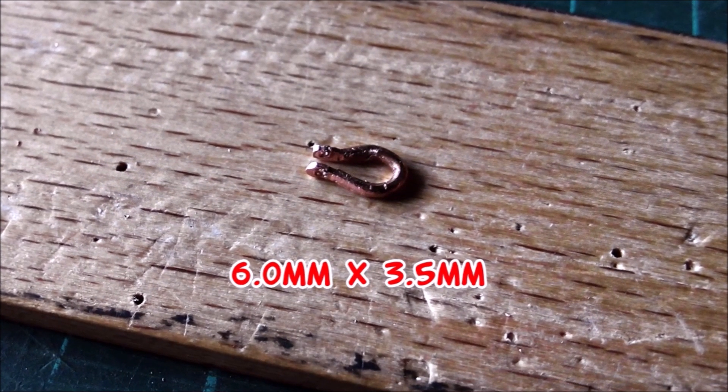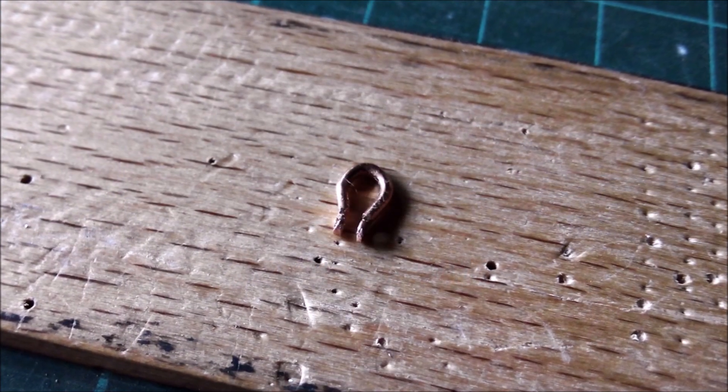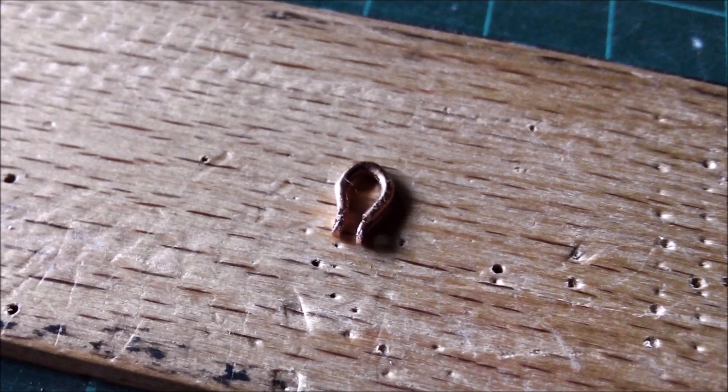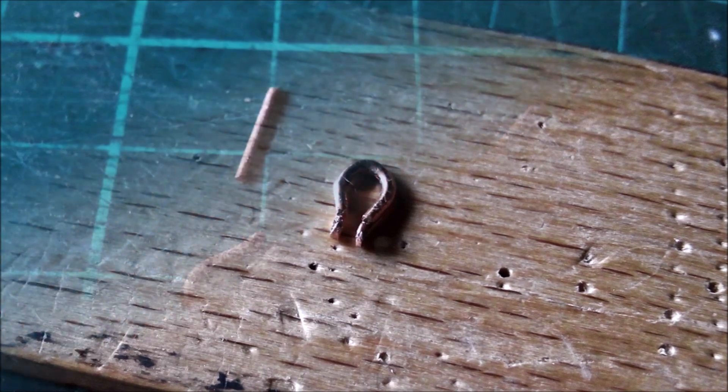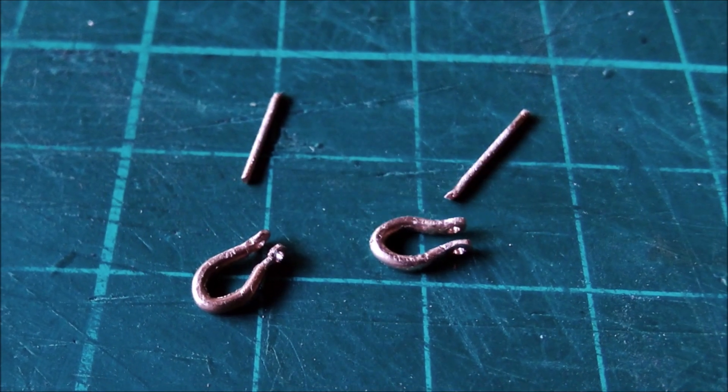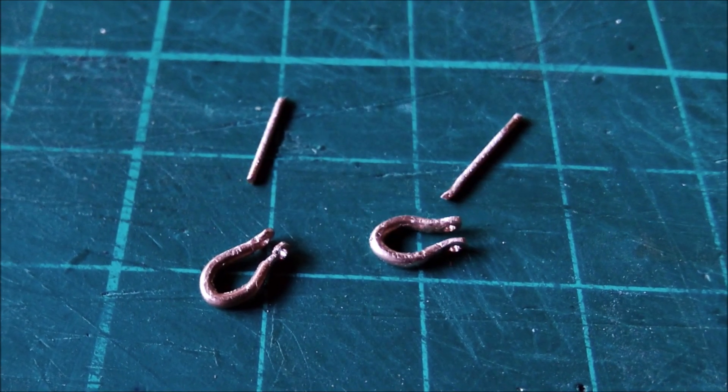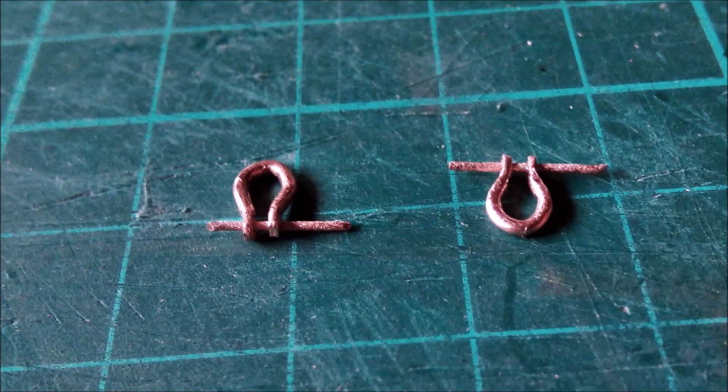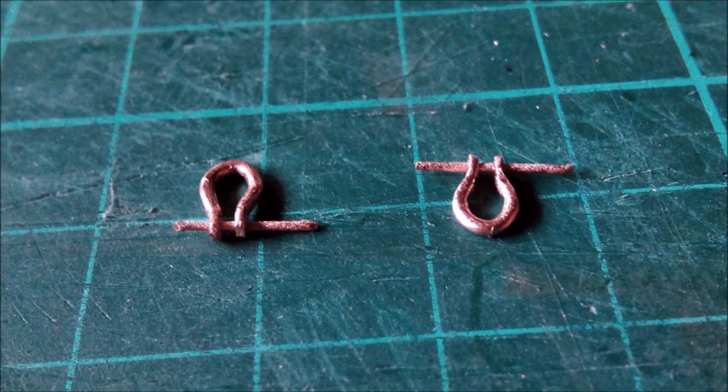It's slightly bigger than the kit shackles but I did that on purpose. You'll see why in one of the next updates on the HST. Here are two of the shackles and two pieces of 1.6mm copper wire that will serve as pins. They fit nicely and will be cut to length after attaching the shackles to the vehicle.